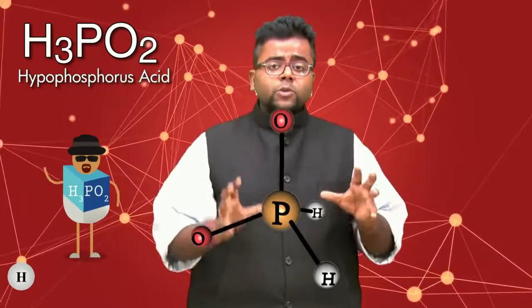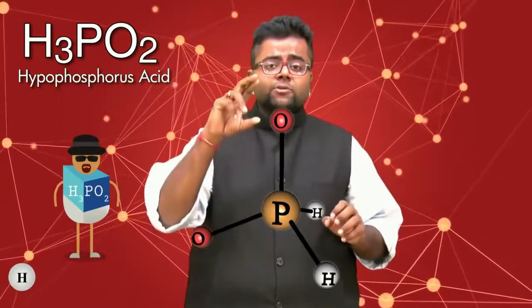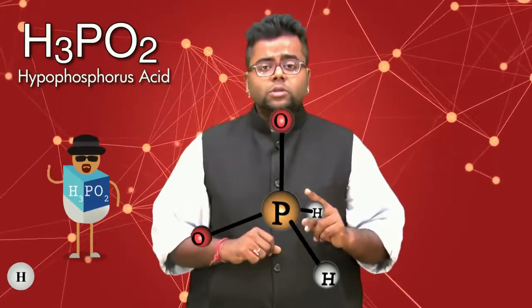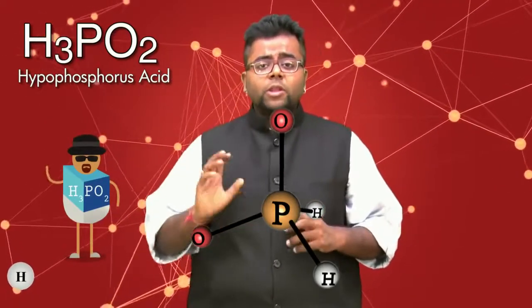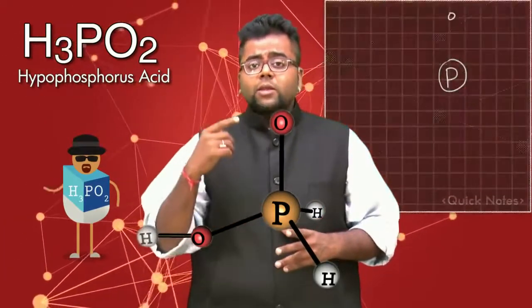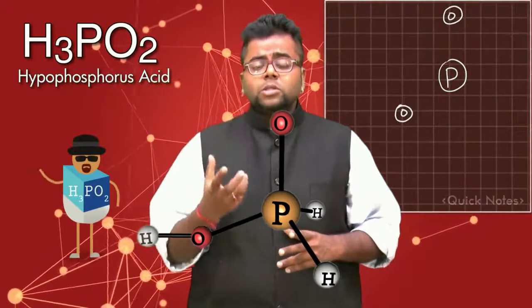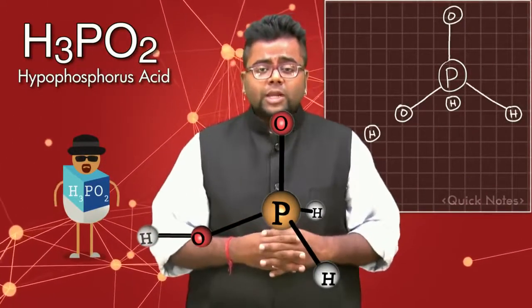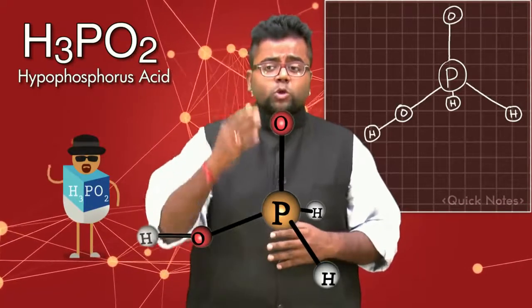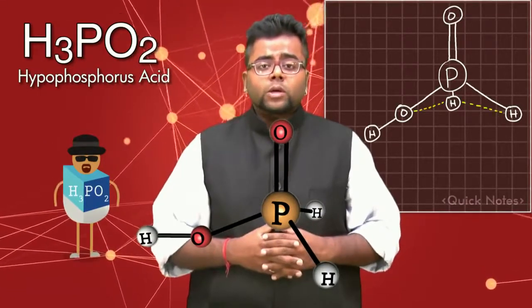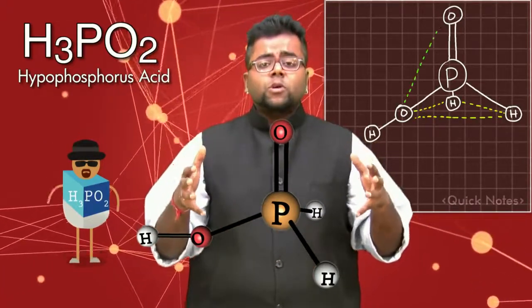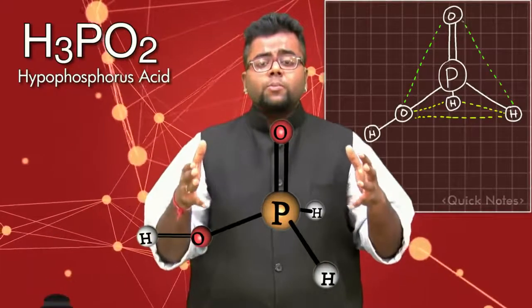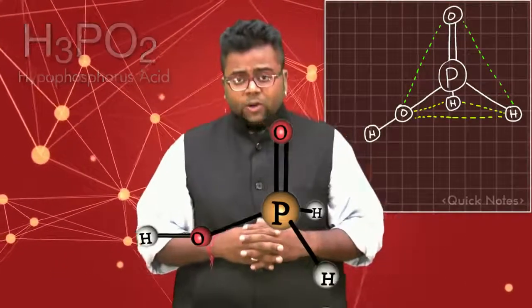So now I have substituted two oxygens and two hydrogens, and I am left with one more hydrogen. This hydrogen you can place with any of the oxygens, and the last oxygen which has nobody attached to it — you just put a double bond to it. So this is the exact structure of H3PO2.